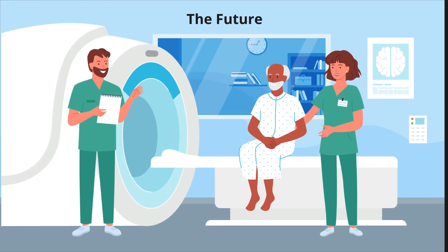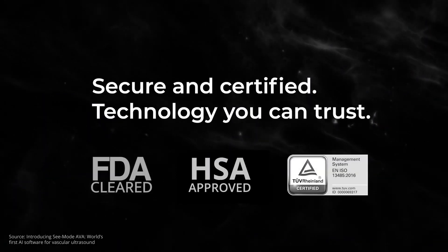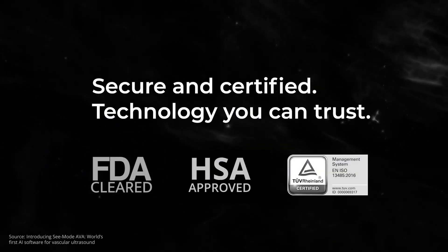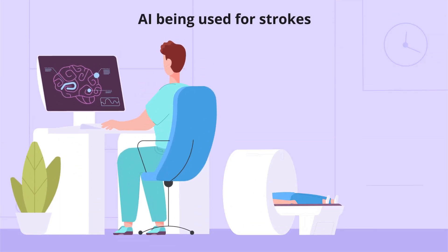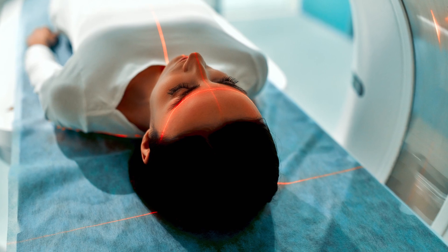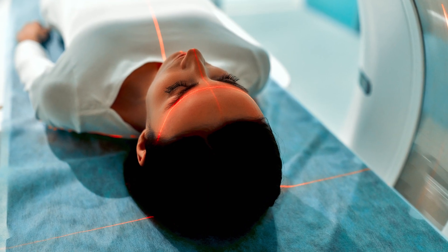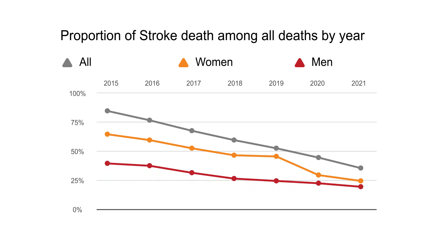AVA is learning to detect high-risk plaques for stroke prediction, and C-MODE is expanding AVA to a range of other exciting use cases within ultrasound. As you can see, using AI to detect strokes is a boon for mankind, but this will certainly not stop here. Using AI, a variety of other indications can be detected ahead of time, which will help prevent conditions from aggravating and result in fewer deaths.